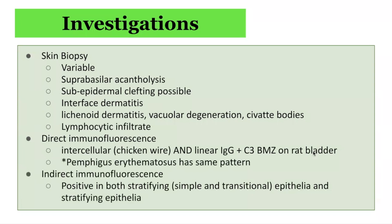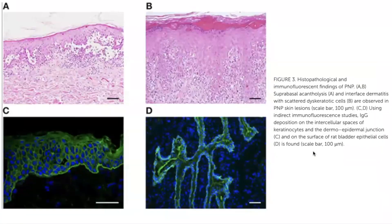Indirect immunofluorescence may be positive in both stratified simple and transitional epithelia as well as stratified squamous epithelia. These histological images demonstrate findings in paraneoplastic pemphigus. On the top left, the image demonstrates suprabasilar acantholysis. On the right, we can see an interface dermatitis with scattered dyskeratotic cells. On the bottom, indirect immunofluorescence studies show IgG deposition on the intercellular spaces of keratinocytes on the bottom left, as well as on the dermal-epidermal junction on the bottom right. The target tissue used in these examples is rat bladder epithelium.